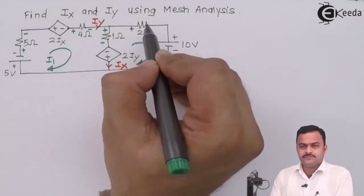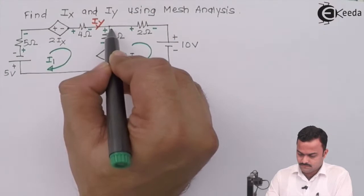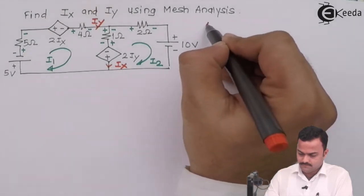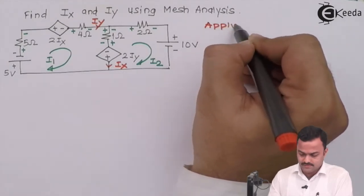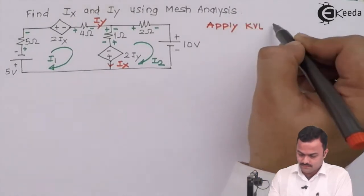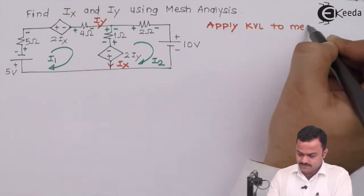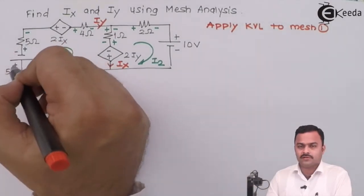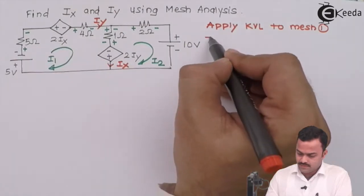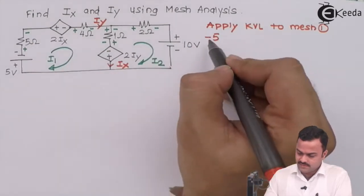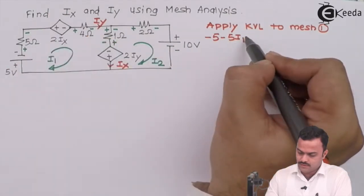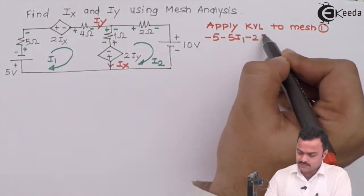Let's apply KVL to mesh one. Starting from the voltage source in this direction: plus five, minus one times i1, so minus i1, then minus a voltage source minus iy. The one ohm resistor again has voltage minus i1 because of i1, and plus one times i2 because of mesh current i2.